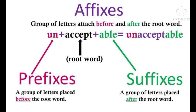Now let's see some more examples for prefixes. Here the word 'unacceptable' is given. 'Un-' is the prefix, and '-able' is the suffix. The root word is 'accept.' So before the root word comes 'un-' and after the root word comes '-able.'